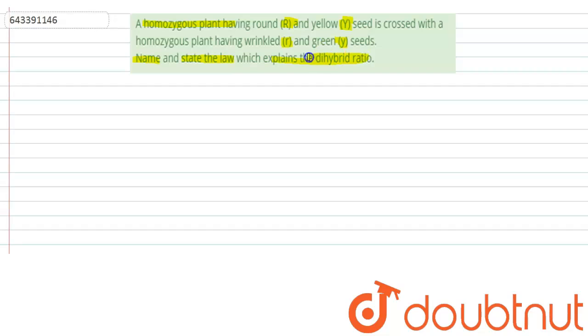This means the di-hybrid ratio. So here it is mentioned homozygous. Homozygous is a condition or state in which two alleles of a gene are similar.